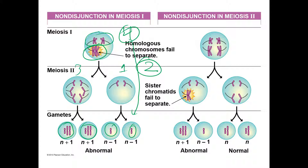If non-disjunction occurs during meiosis II, everything goes as it should during meiosis I and homologous chromosomes separate properly. But in one daughter cell on the left, the sister chromatids fail to separate as they should. You end up with one daughter cell with three chromosomes, one with one chromosome, and two daughter cells with the appropriate number of chromosomes — two.